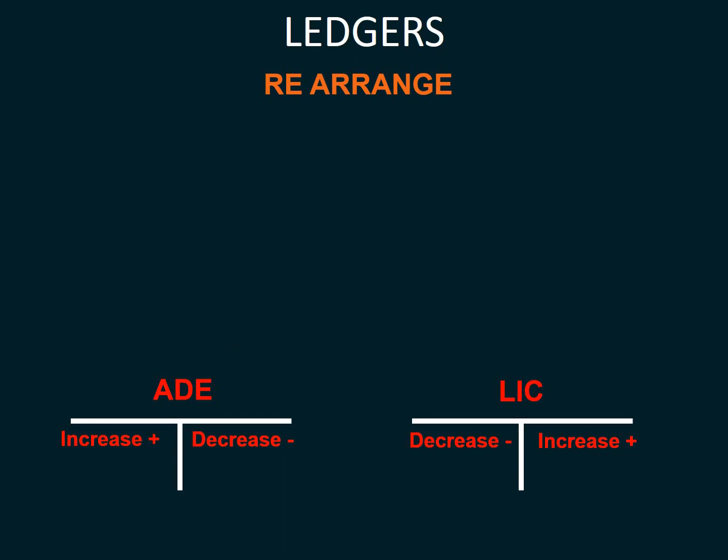For LIC — liabilities, income, and capital — they decrease on the debit side and increase on the credit side. We will illustrate these double entry rules by recording transactions in the general ledger, debtors ledger, and creditors ledger. But first, let's have a look at the cash transactions.